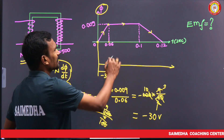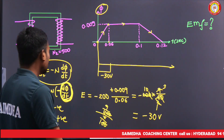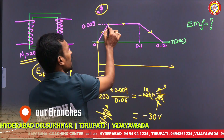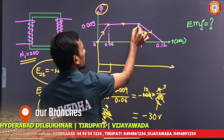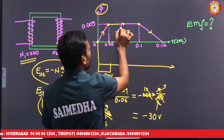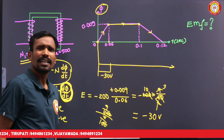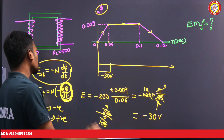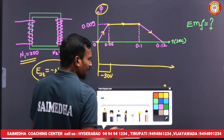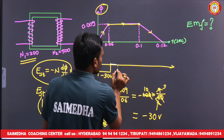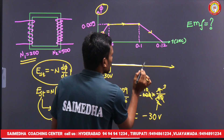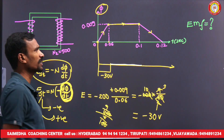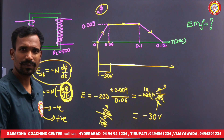What about the zero-change region? Here the flux is 0.09 and there also 0.09 — there is no change in flux. If there is no change in flux, there is no EMF induced. The induced EMF is zero in this case.